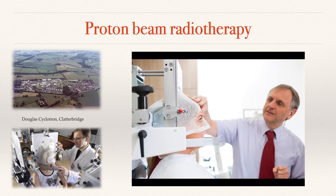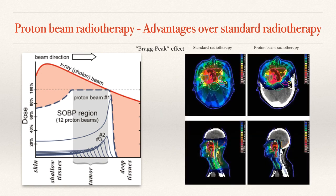We're also extremely lucky to have the facility for proton beam treatment. Protons are very large, high-energy particles that offload their energy over a very short distance — this is about the Bragg peak. Looking at the X-ray curve in pink, it releases a lot of energy over a very long distance and drops off very slowly, so that energy keeps going into tissues beyond what you're trying to treat. The proton curve, however, stops very abruptly at the Bragg peak as protons dump all their energy, going only about 2 millimetres beyond the target area.